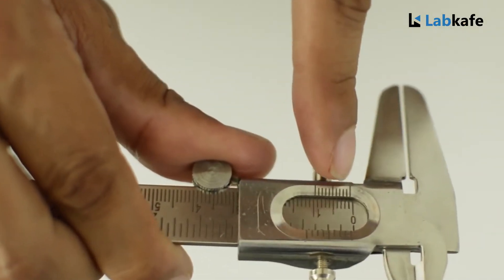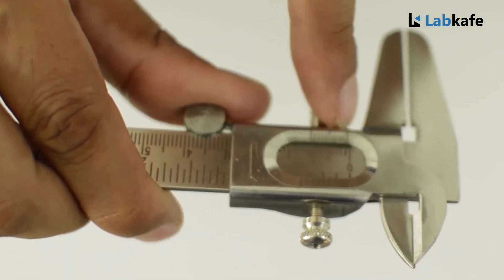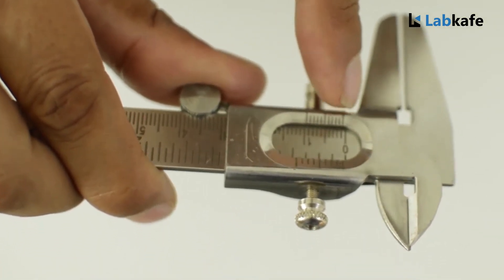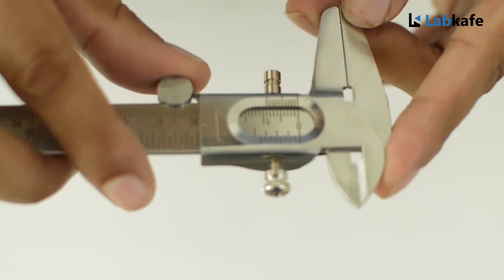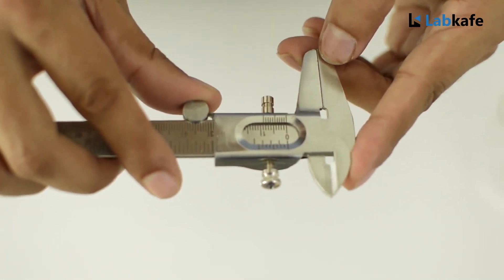But sometimes, you see the vernier zero does not coincide with the zero of the main scale. In that case, we say this is positive zero error. We have to subtract the positive zero error from the actual reading.